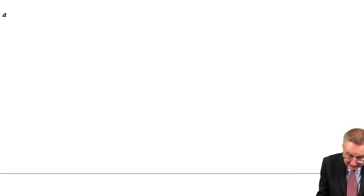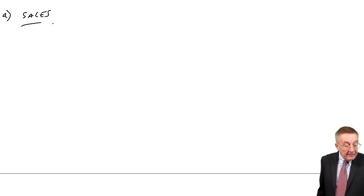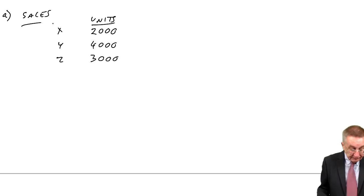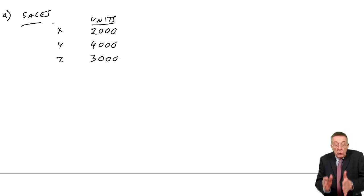First of all, a sales budget. Well, I think that's easy. Right at the top it says we produce three products for the coming accounting period. We're told what the budgeted sales are. So X, Y, Z. In units, we're budgeting on 2,000 X, 4,000 Y, 3,000 Z. Note that A requires a sales budget. First of all, quantities. That's the target for our sales managers. How many are they going to sell?